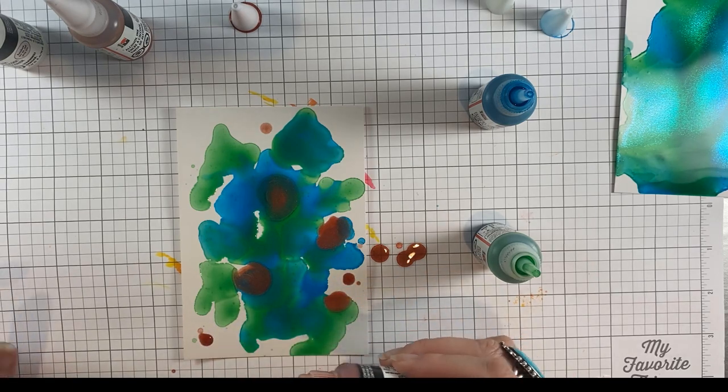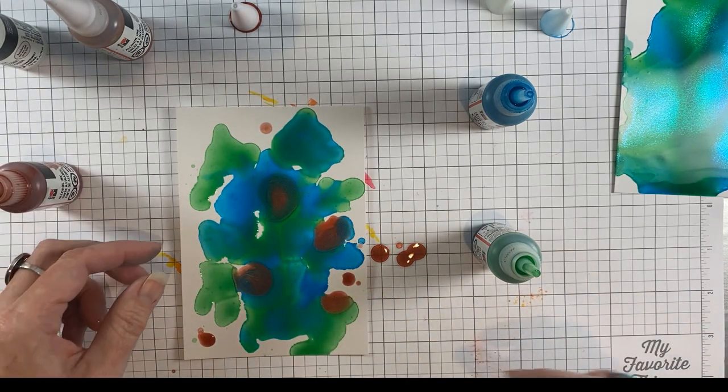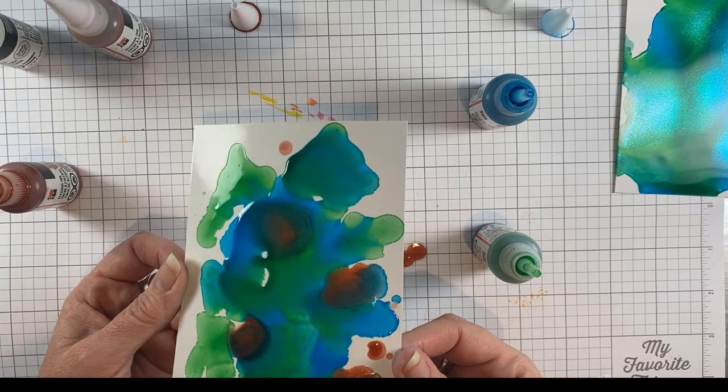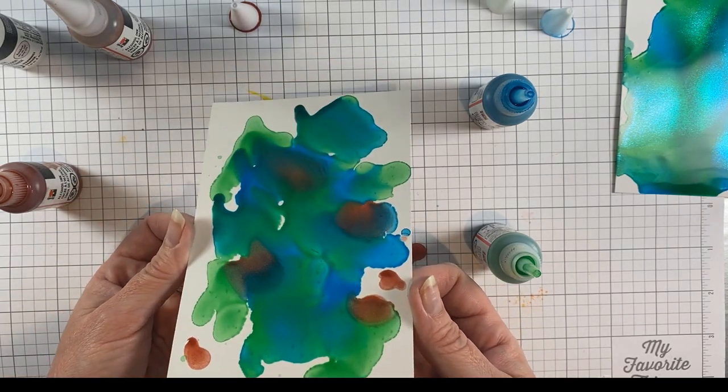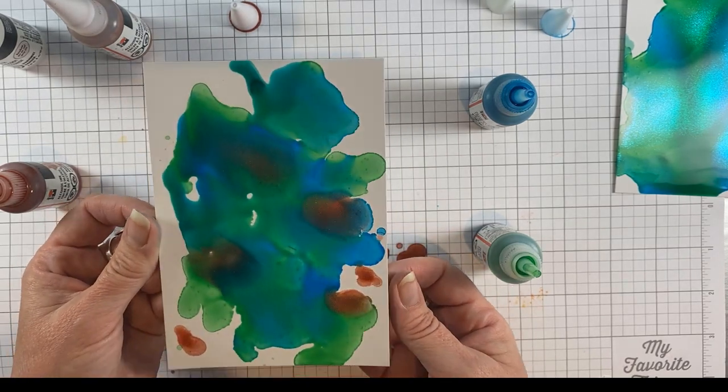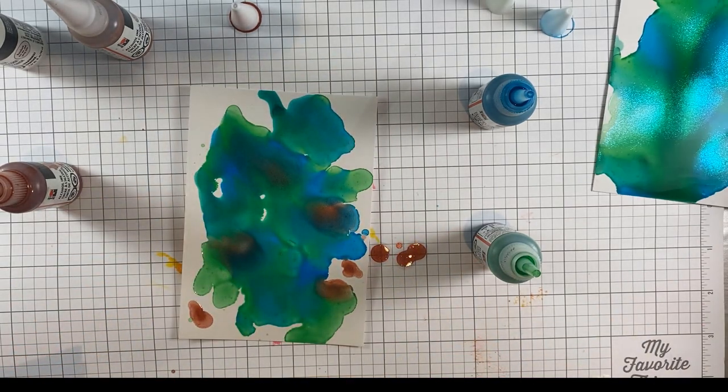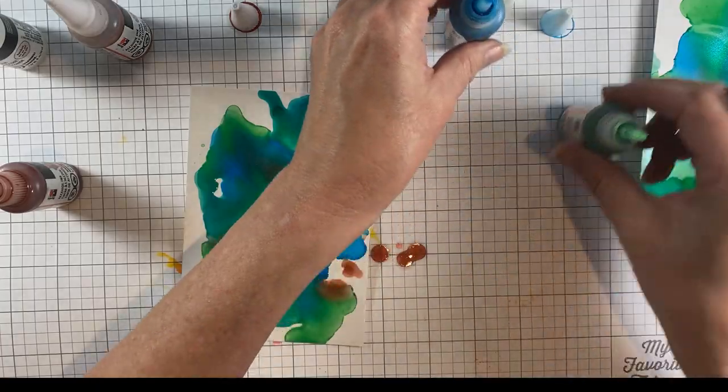The sparkly mixative blooms a little bit faster than the metallics, but I like to just swirl them around and let them mix into the alcohol ink color. You can see how shimmery and beautiful they are and how you get that stone look.